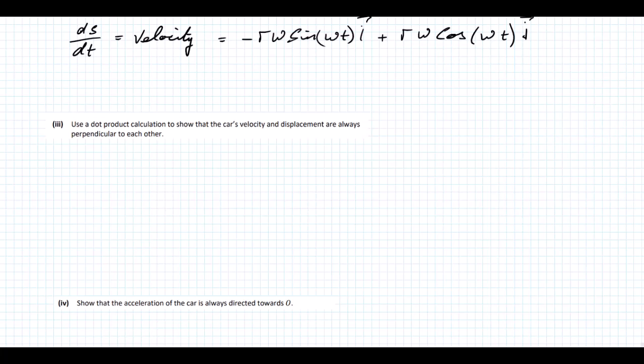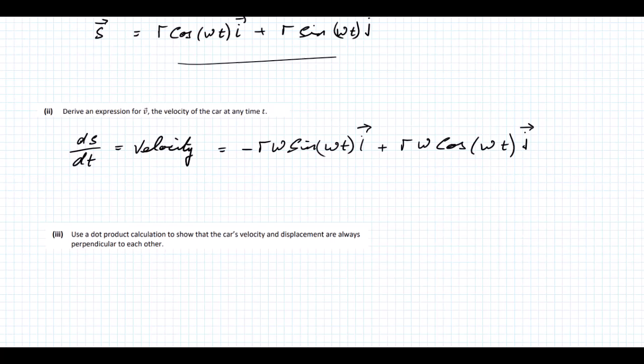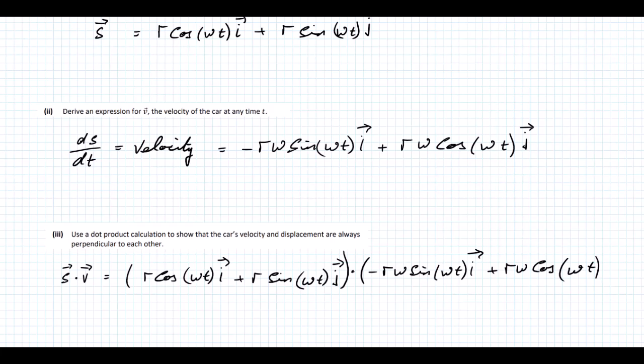Use the dot product calculation to show that the car's velocity and displacement are always perpendicular to each other. We've got to take the velocity and the displacement vectors and do the dot product. So we have S dot V. Let's do this dot product.